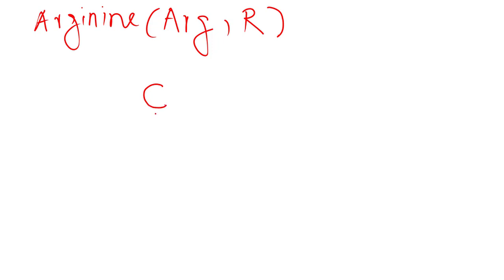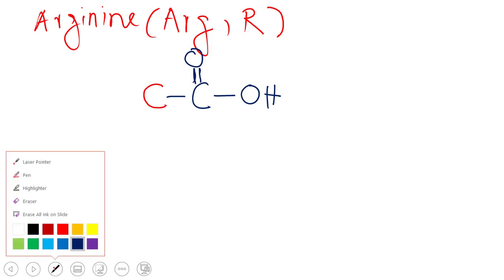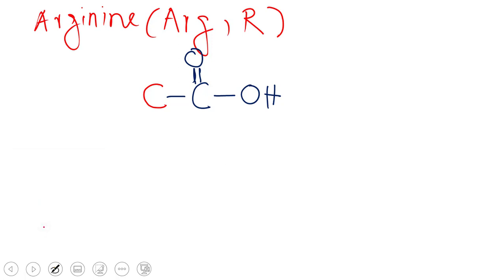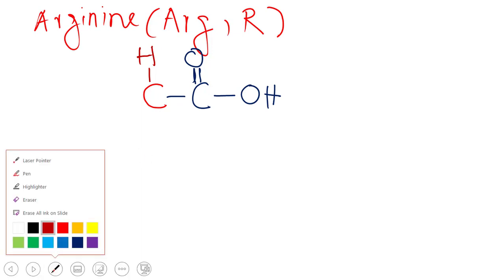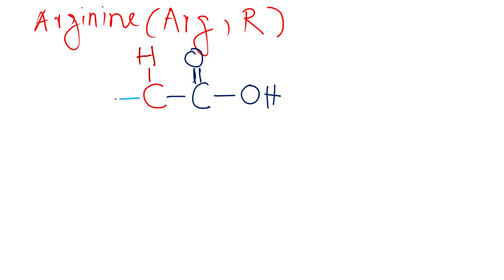This is arginine, so we start with the alpha carbon. Let's change the color. Here is our carboxylic group, C double bond O, and then hydrogen. Let's change the color of hydrogen to make it a little dark brown so we can see it properly. Then we come to the amino group, NH2.